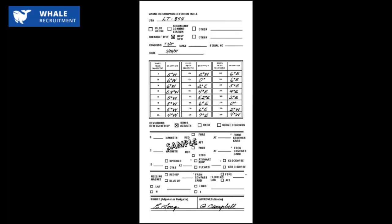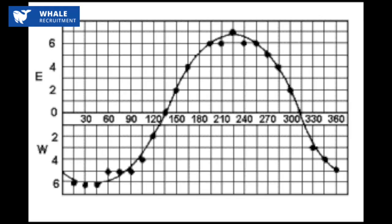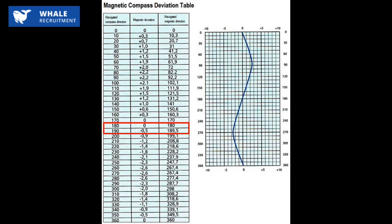Usually, the table of deviation consists of figures for every ten degrees of course, from zero to 360 degrees. The only thing you have to do to enter the table of deviation is know the course of your ship. If you have 184 degrees, you have to take the intermediate figure between 180 and 190 degrees in the table of deviation and simply calculate it.